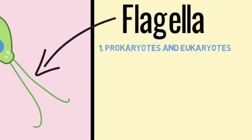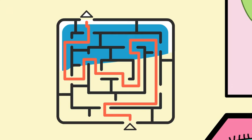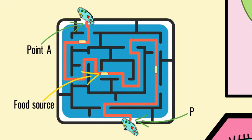Flagella are found in both prokaryotes and eukaryotes. Cilia are found only in eukaryotes. These structures are cellular appendages used to capture nutrient sources and to help cells move in different directions.